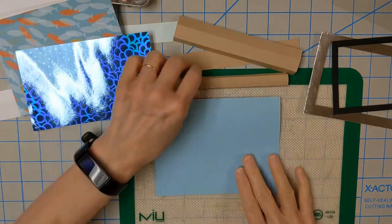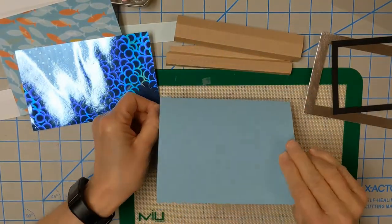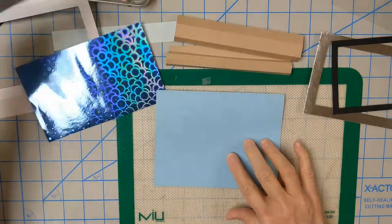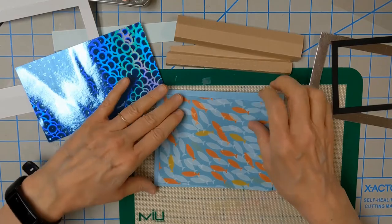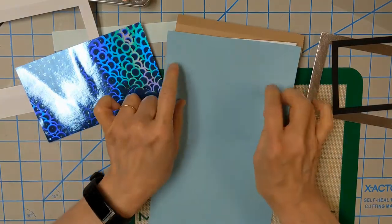Alright, so let's start with making our card. This is our aqua box card. This is the paper that I'm going to use for the front of the card. It's a nice fishy looking paper. You can use whatever makes you happy.